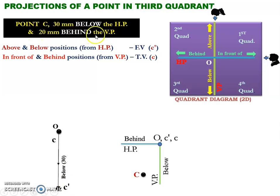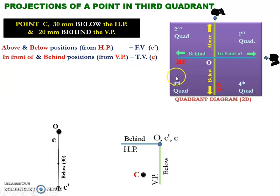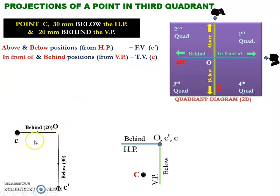From the second half of the problem, we can understand that the point is located 20 mm behind the vertical plane. So the top view point C, which is located at the origin, needs to be moved in the behind direction for a distance of 20 mm. Here, the behind direction is towards the left. So we need to move point C towards the left-hand side for a distance of 20 mm. In the general method, we rotated the horizontal plane 90 degrees clockwise. In the same way, the horizontal line OC needs to be rotated 90 degrees clockwise.